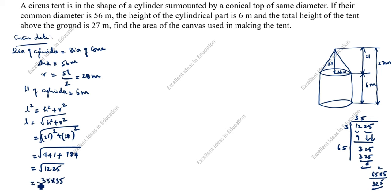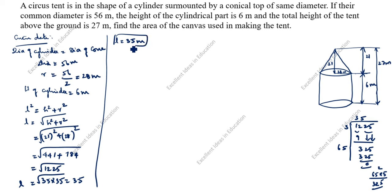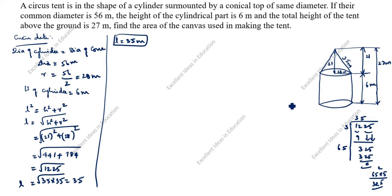The slant height is 35 meters. Next, we find the area of canvas used in making the tent, which means the curved surface area of the canvas equals the curved surface area of the cone plus the curved surface area of the cylinder.